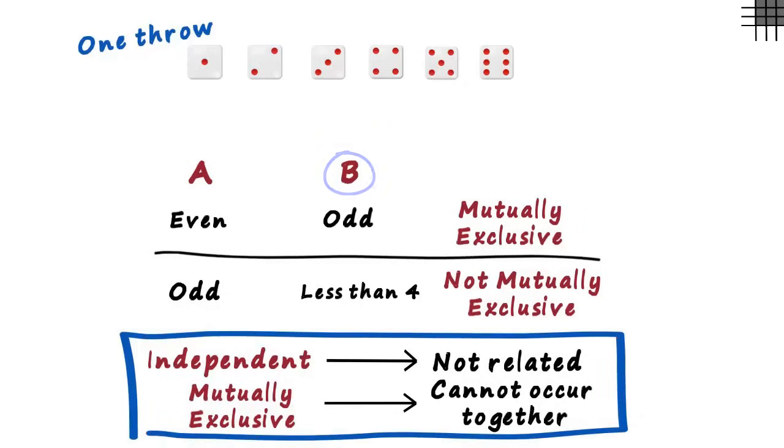So yes, an event cannot be independent and mutually exclusive at the same time. Because if they are independent, they may occur together. And if they are mutually exclusive, one event will be dependent on the other. That is, if one occurs, the other one will not occur.